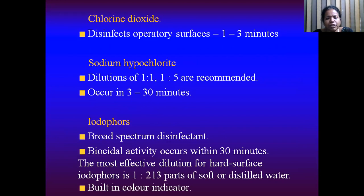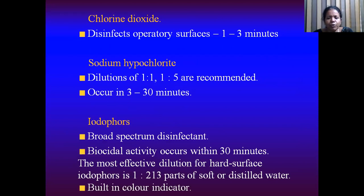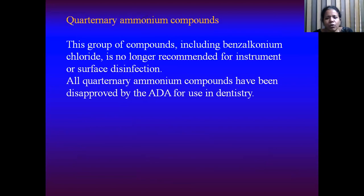Chlorine dioxide is used for disinfecting operatory surfaces and takes about 1–3 minutes. Hypochlorite disinfects in 3–30 minutes and is used in a concentration of 1:1 or 1:5. Iodophores are broad-spectrum disinfectants; biocidal activity occurs within 30 minutes. The most effective dilution for hard surface iodophores is 1:213 parts of soft or distilled water, and it has a built-in color change indicator. Quaternary ammonium compounds are a group including benzalkonium chloride, but these are no longer recommended for instrument or surface disinfection.